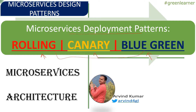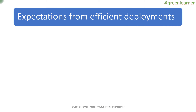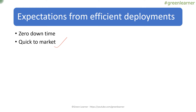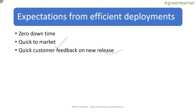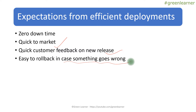Let's first understand what the expectation is from an efficient deployment strategy. First, we try to achieve zero downtime — there should be no downtime because it negatively impacts users. Second, we want to get new features to market quickly, reducing time to market. Third is quick customer feedback on new releases. Fourth is easy rollback in case something goes wrong, because a broken release can negatively impact the product.